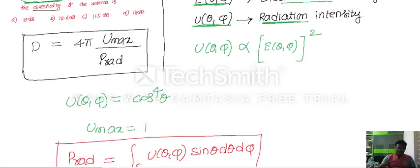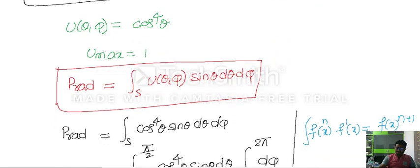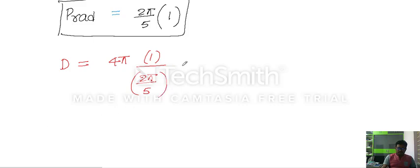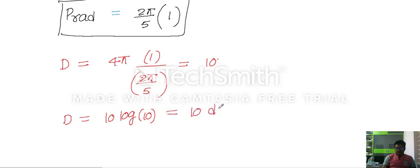Now applying the directivity formula: D = 4π × U_max / P_rad = 4π × 1 / (2π/5) = 10. Converting to dB: D = 10 log(10) = 10 dB. This is the directivity for the radiation pattern case.